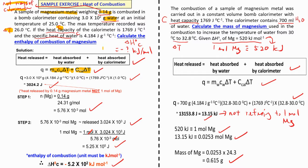It asks us to calculate the enthalpy of combustion. Once you see the words 'enthalpy of combustion,' you label it ∆H_combustion, and your final answer must be negative and in the unit kilojoules per mole — it cannot be joules only. Since mass is given, you write: heat released = heat absorbed by water + heat absorbed by calorimeter, then substitute your information.